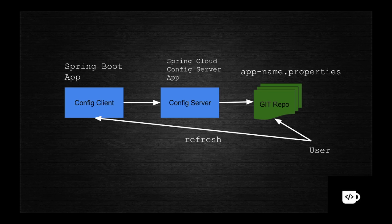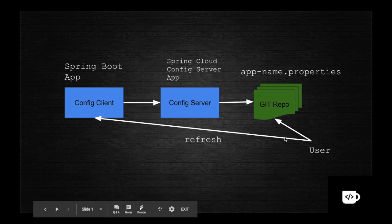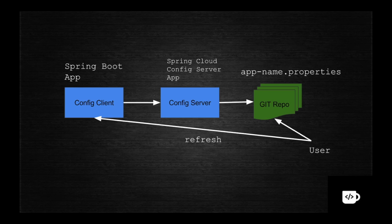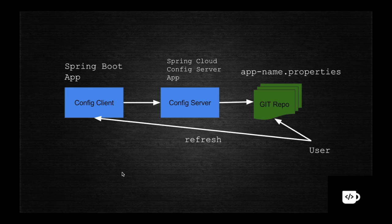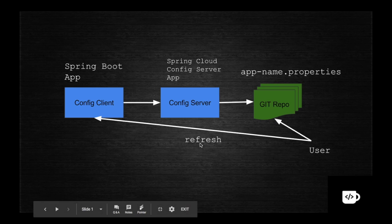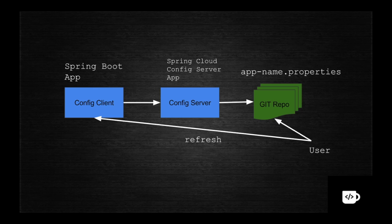Spring Cloud Config Server is widely used in microservices design patterns where multiple microservices connect to a single config server, which can connect to multiple Git repositories. When you change the Git repository, the microservices reflect the new property without a production release. I'll upload this code to GitHub so you can try it yourself — just update the Git repository path to match your local setup. Hope you liked this video!